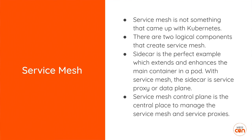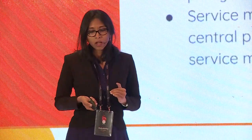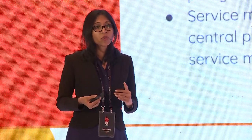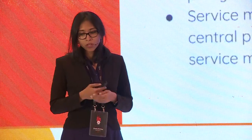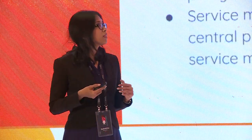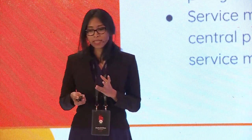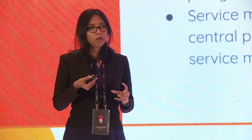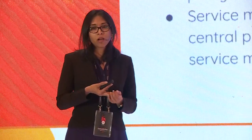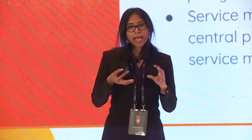Now let's talk about another architecture: the service mesh. Service mesh is not something that came up with Kubernetes, but because of Kubernetes you can implement a service mesh architecture. There are two logical components: a control plane and a data plane. In Kubernetes, a pod has a main container and a supporting container — a sidecar — that allows communication with other containers and supports that main container.